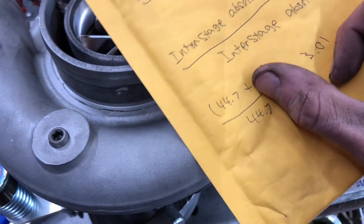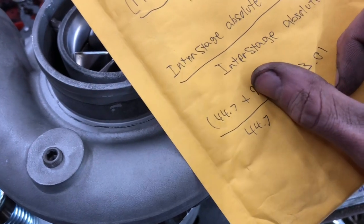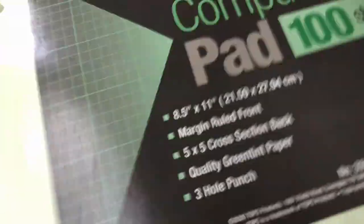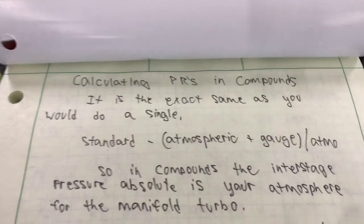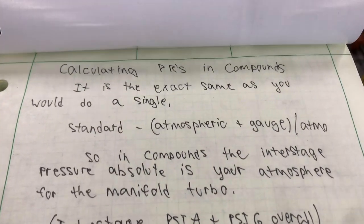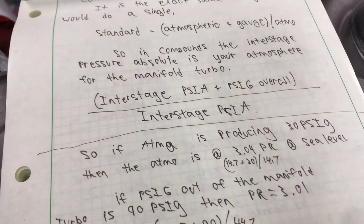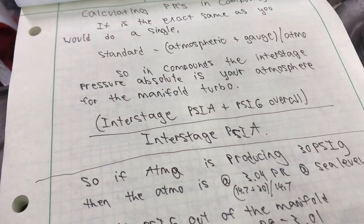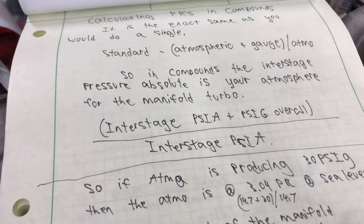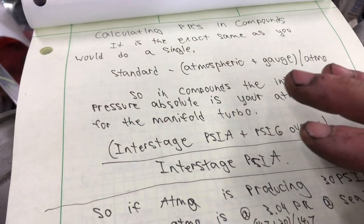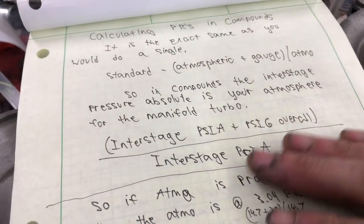Now this might sound crazy, right? Because all of a sudden this number gets really big, but that's not a pressure number, it's just a ratio of pressures, and I just want to say just kidding, because somebody sent me this nice old book. Calculating pressure ratios and compounds, the exact same as you would do at the single standard atmospheric plus gauge divided by atmospheric.